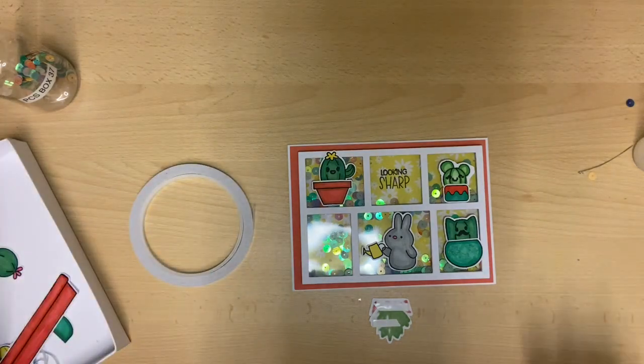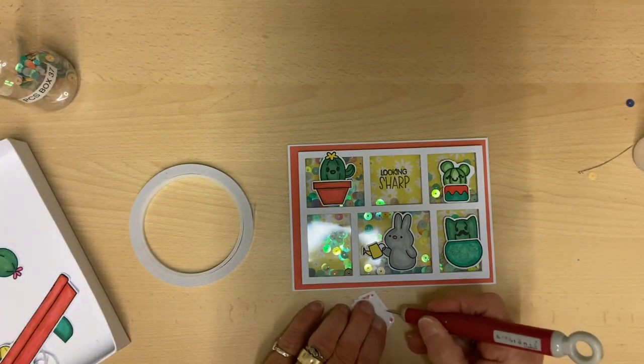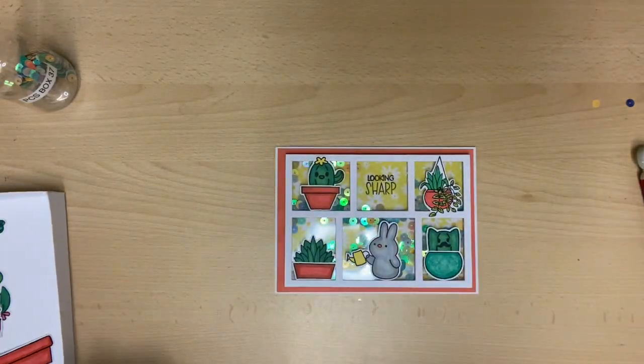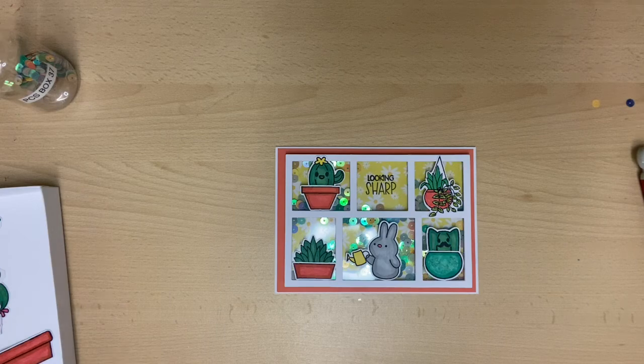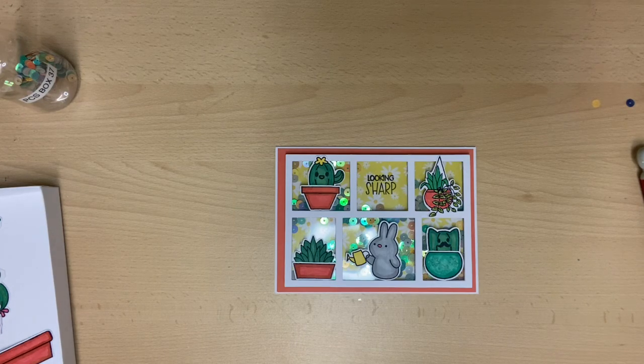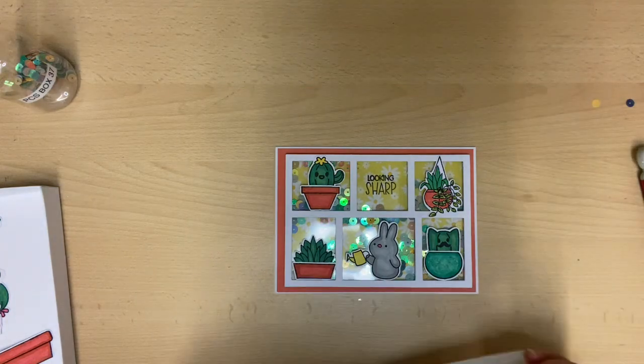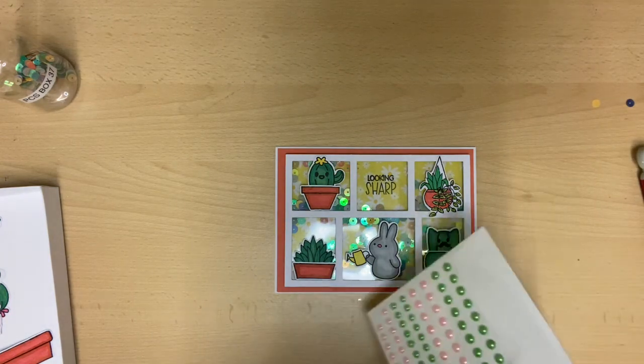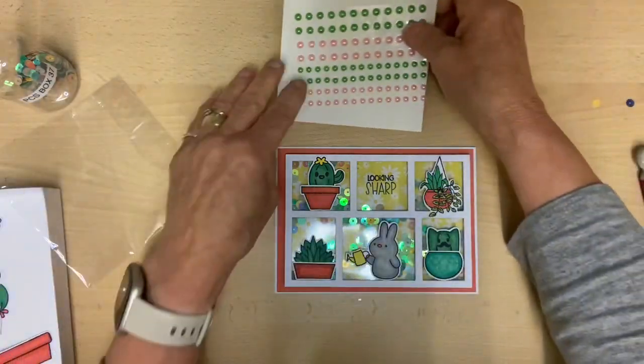But because they're going on acetate, I'm going to use some double-sided tape in order for them to stick down, because glue won't stick to the acetate—it will come off. So we'll get these put on. So that's those elements stuck on. I just want to do a little bit more embellishment. And we've got some flat back pearls in the kit as well, so I'm going to put a little...